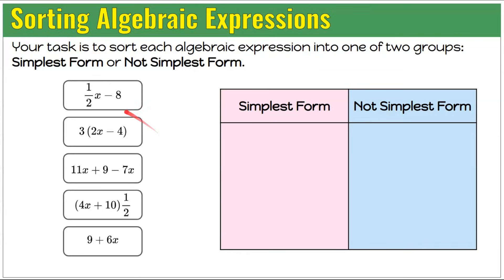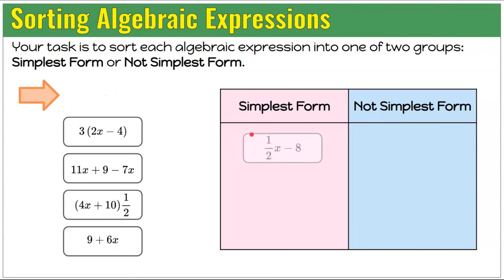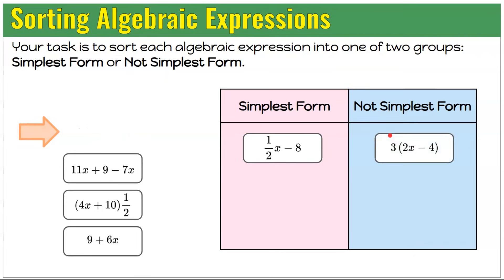Let's sort these together. First: 1 half x subtract 8. There are no parentheses and no like terms — only one variable term and one constant term — so it is in simplest form. Second: 3 multiplied by the quantity 2x subtract 4 has parentheses, therefore it's not in simplest form. In simplest form you will not have parentheses.